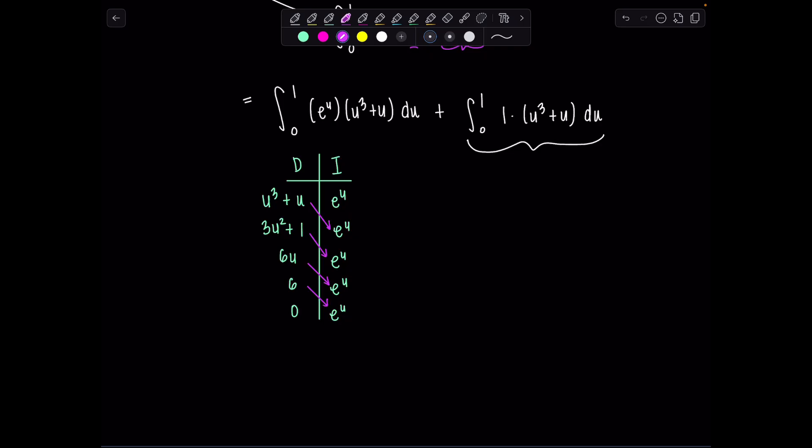Then we take diagonal products and the signs alternate. Beautiful. So I think we're ready to go. I'm going to write out what the antiderivative is. Notice here I have e^u times all of these quantities.